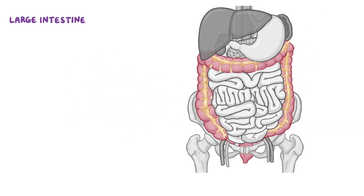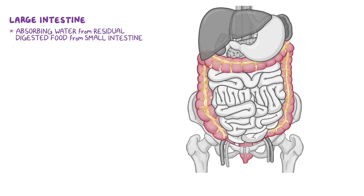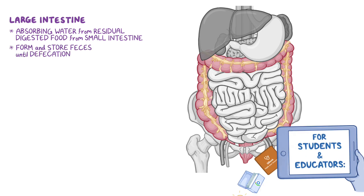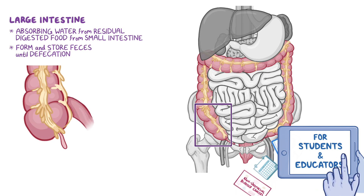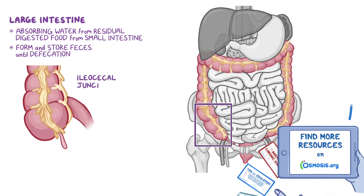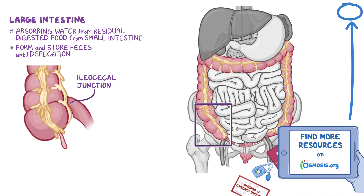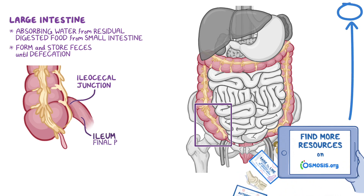The large intestine is a part of the digestive tract specialized in absorbing water from the residual digested food coming from the small intestines, while forming and storing feces until defecation occurs. The large intestine, or colon, begins at the ileocecal junction where it is continuous with the ileum, which is the final part of the small intestine.